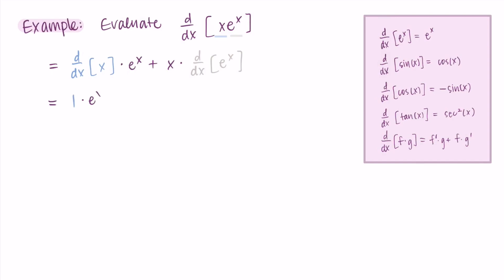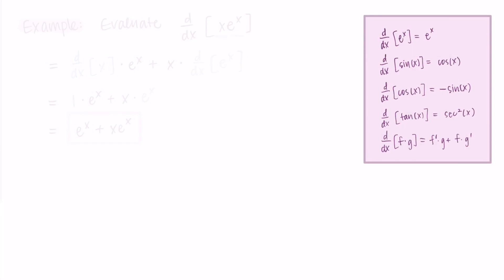The derivative of x is 1, so I have 1 times eˣ, and the derivative of eˣ is eˣ, so I add x times eˣ. Cleaning things up, the derivative is eˣ plus x times eˣ.